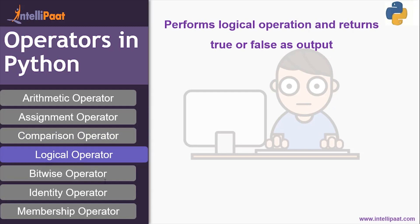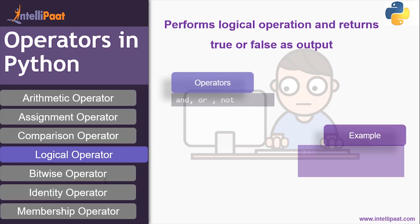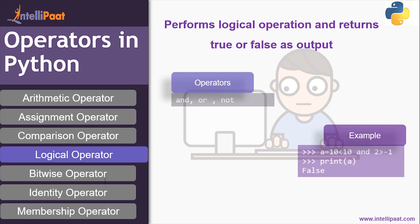Next is the logical operator. These logical operators are used to perform logical calculations, and the keywords which are part of it are 'and', 'or', and 'not'. For example: a = (10 < 10) and (2 > -1), then print a — you get the output as False.